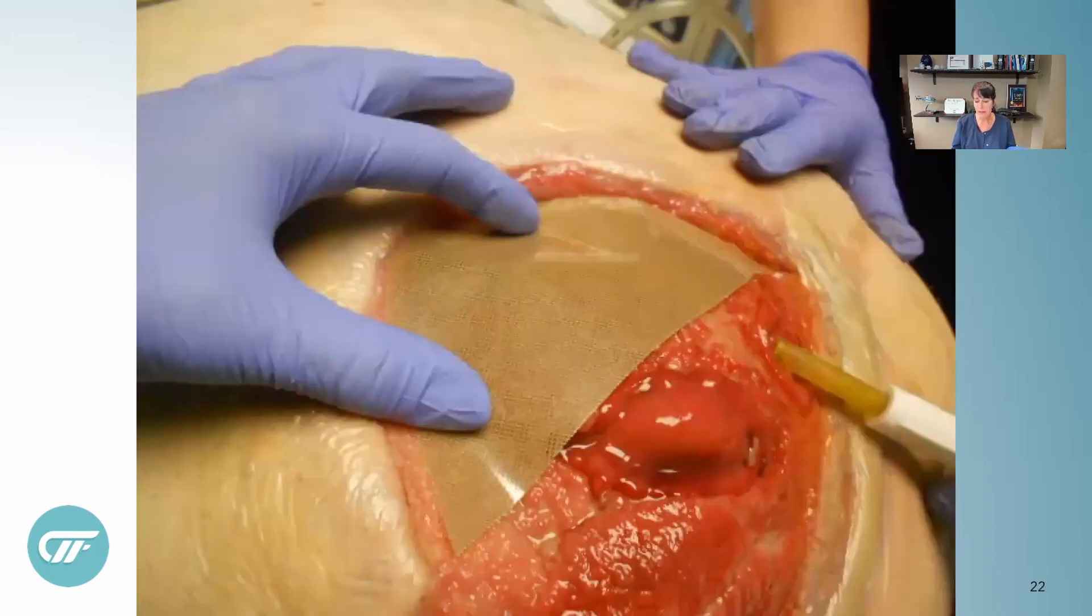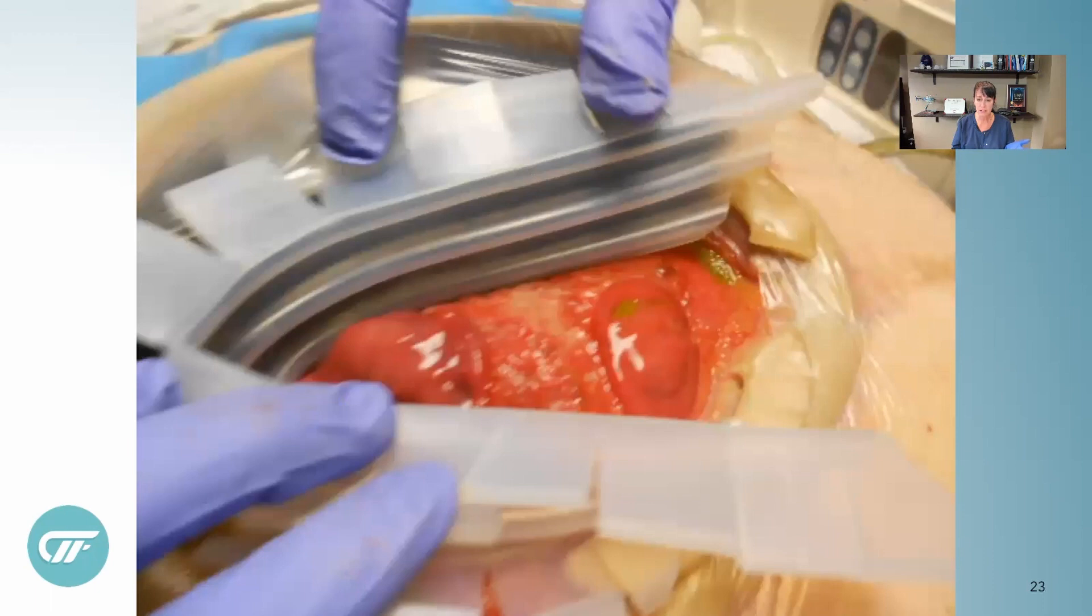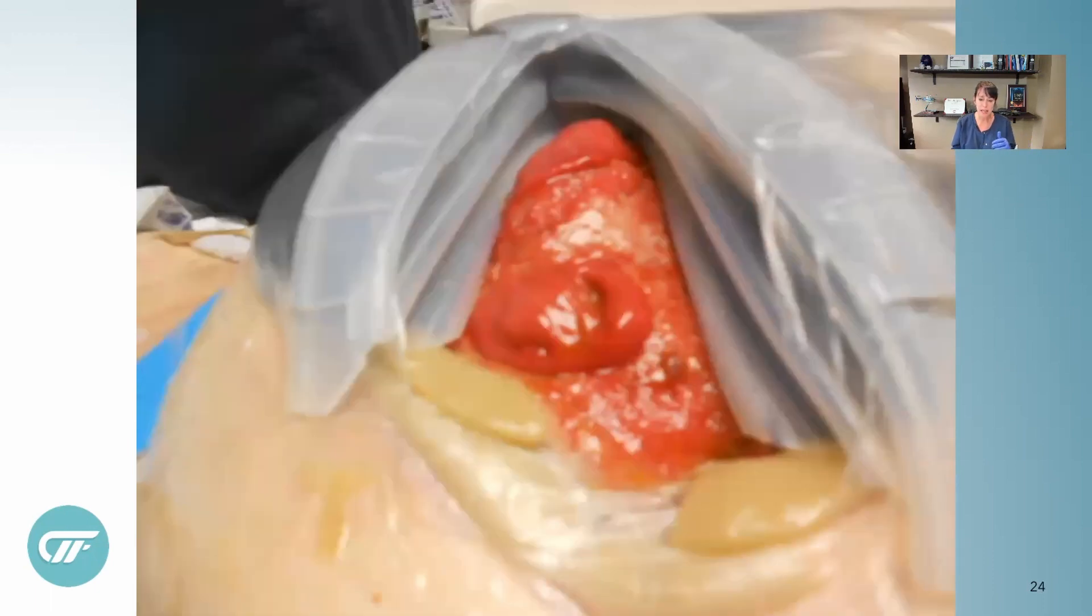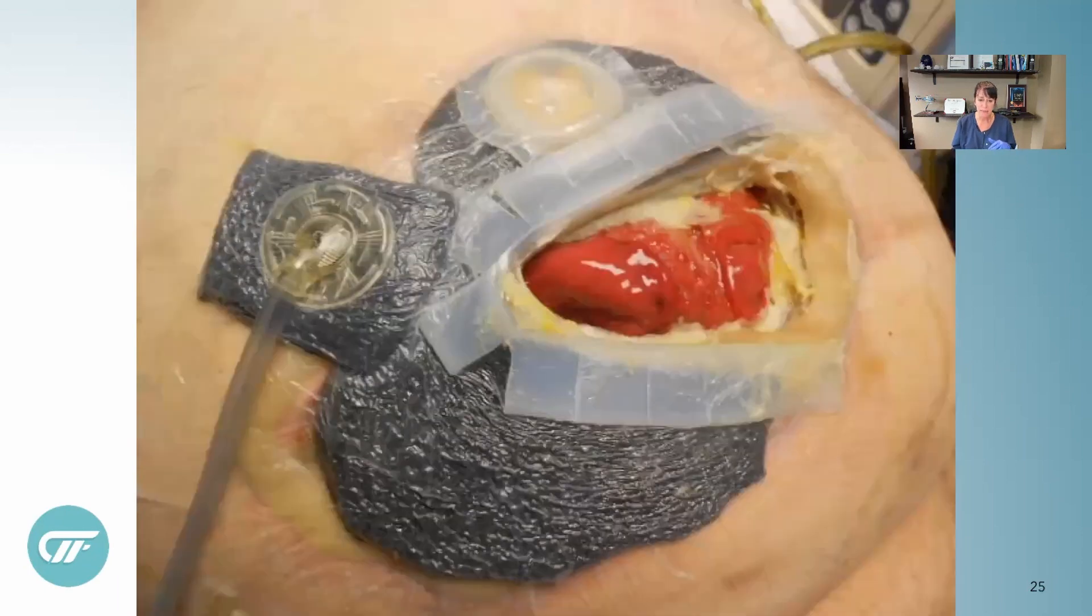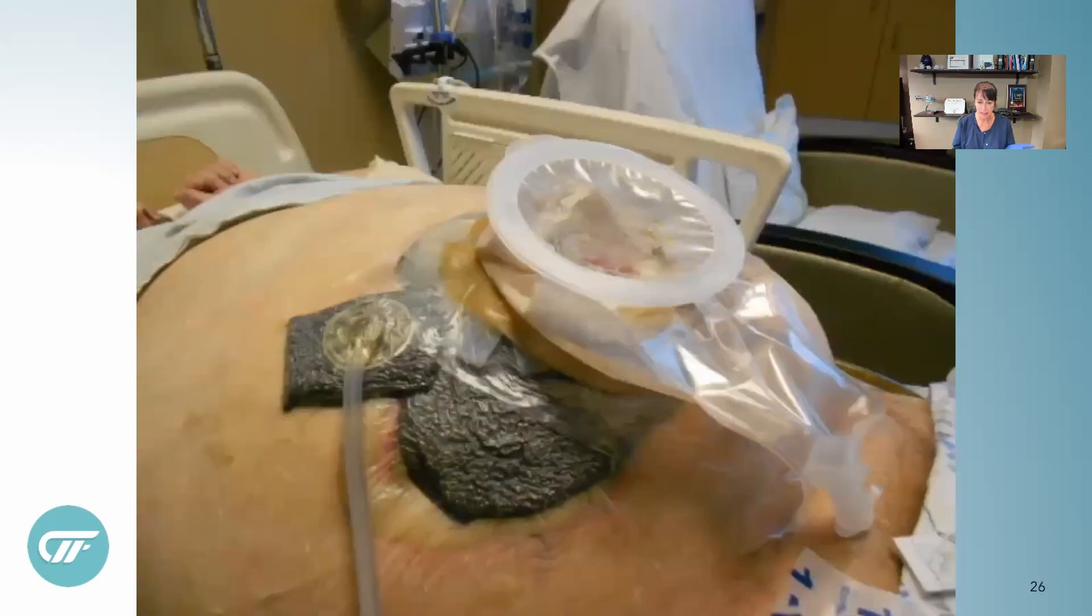I'm putting a non-adherent contact layer down. We're putting the isolator strip around the group of fistulas and using some barrier strips and drape to get it in place, then deploying negative pressure and putting a big poaching system over the top. That's what it looked like.